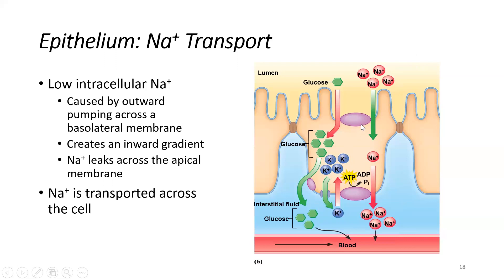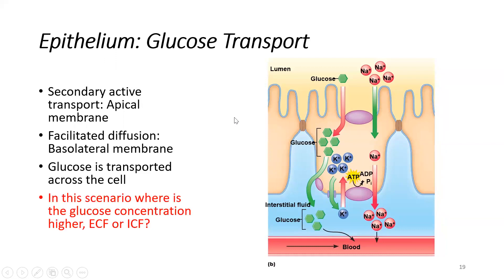We can leak sodium and use that energy to move glucose against its gradient on the apical surface. On the basolateral surface, we pump potassium and sodium in opposite directions, keeping the relative intracellular and extracellular concentrations of sodium stable — sodium is moving both in and out, so it doesn't build up in either compartment. To summarize: secondary active transport drives sodium-glucose co-transport on the apical side, and facilitated diffusion moves glucose across the basolateral surface.